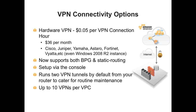You've got a couple of VPN connectivity options. First, you have a hardware VPN option where we reach out to your on-premises hardware, connect via IPsec, and create that persistent VPN connection. That supports both BGP and static routing, and you can do this all through the console. The charge is $36 per month. We support multiple routers and environments. You can do up to 10 VPNs per VPC environment.